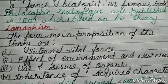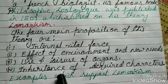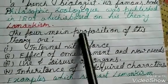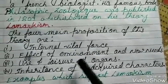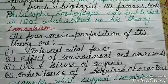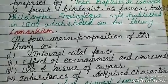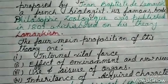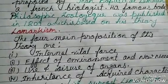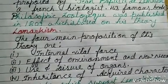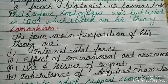Next is inheritance of acquired characters. This is based on the above three propositions. It means whatever an individual acquired in its lifetime — due to the internal vital force, the effect of environment, new needs, and the use and disuse of organs — is inherited by the next generation.